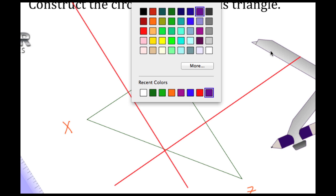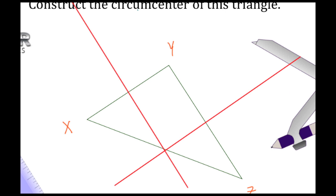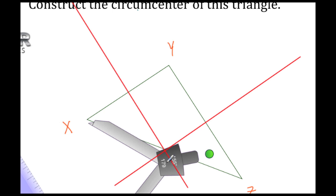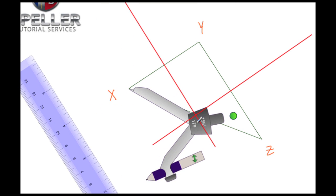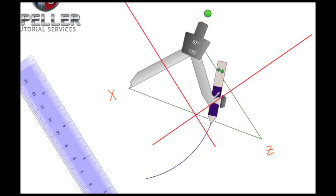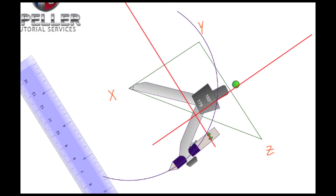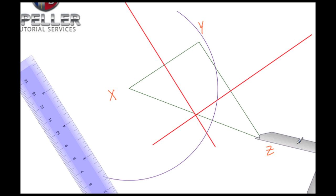Now let's switch back to that purple color. I want to place my compass here on vertex X, draw yet another arc, and then move here to vertex Z and again draw another arc.